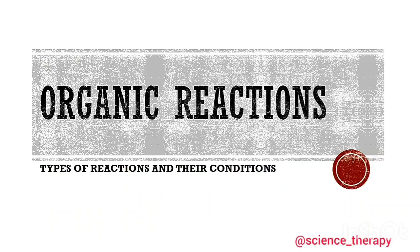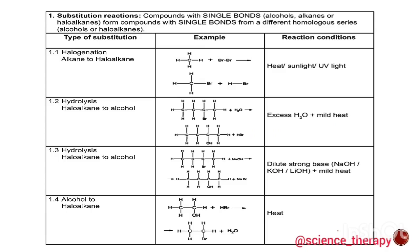Hello, Grade 12s. In today's lesson we're going to be looking at organic reactions — the types of reactions and their conditions. We have substitution reactions: this is when compounds with single bonds — your alcohols, alkanes, or haloalkanes — form compounds with single bonds from a different homologous series. The first type of substitution reaction is halogenation.